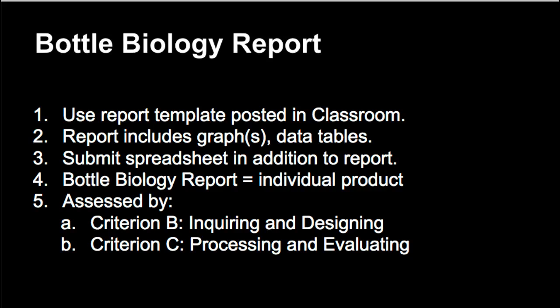Your Bottle Biology Report is an individual product — something you'll be working on individually — showing your level of proficiency in two different IB criteria. One is Criterion B, inquiring and designing, which is basically your question and hypothesis. The second is IB Criterion C, processing and evaluating. This covers your data table and graphs, ways that you display and organize data, and also your data interpretation — your claim and evidence using the data, the graphs, and statistics to support a claim.